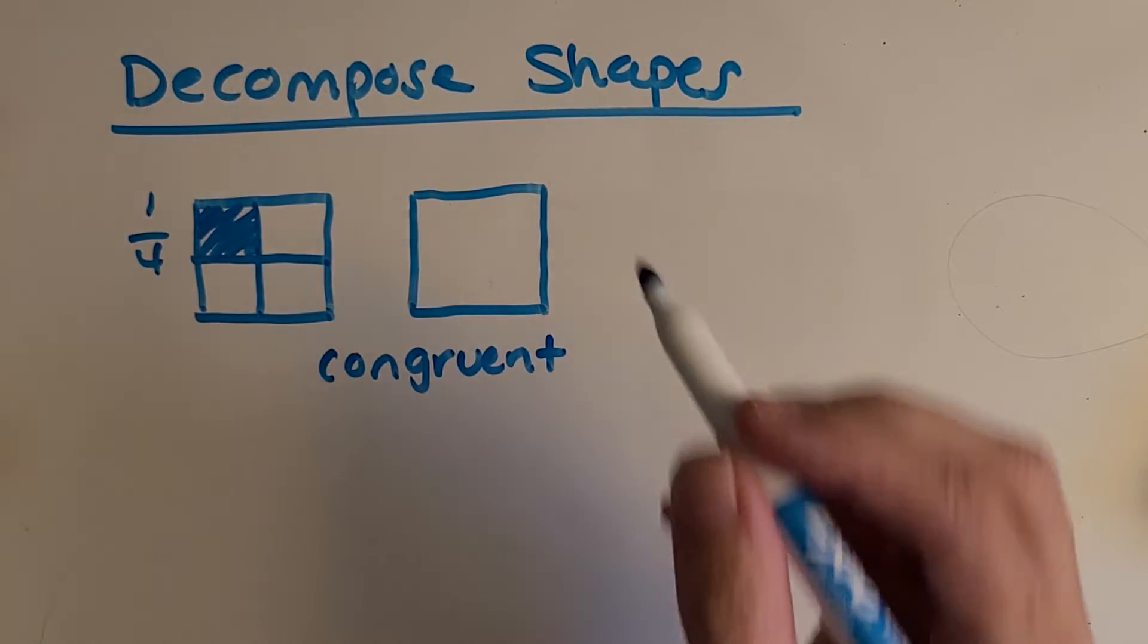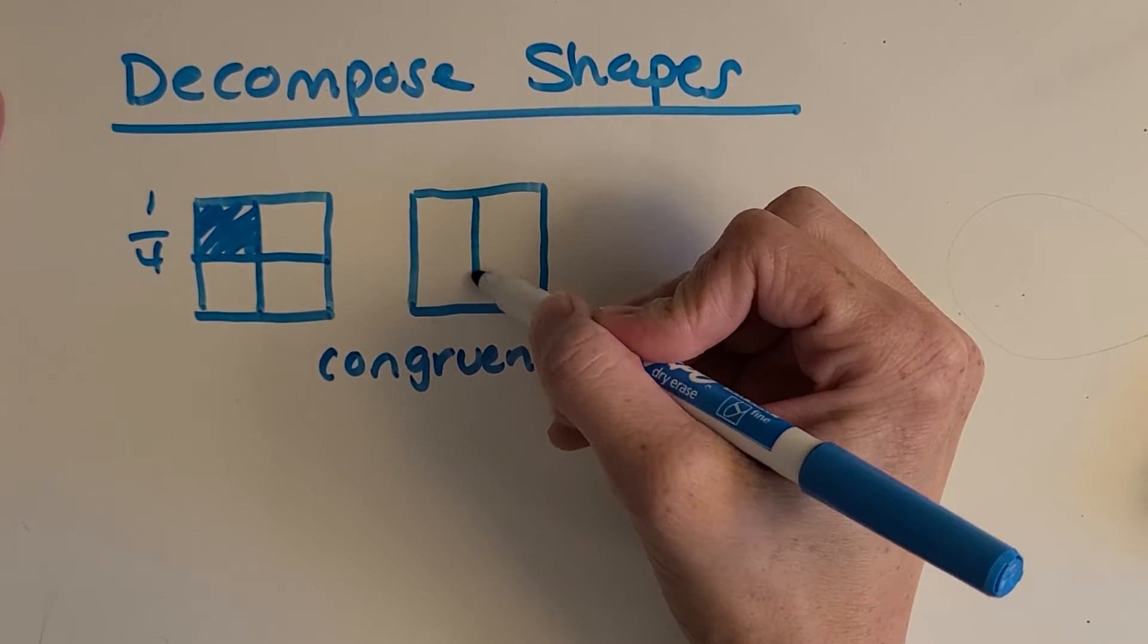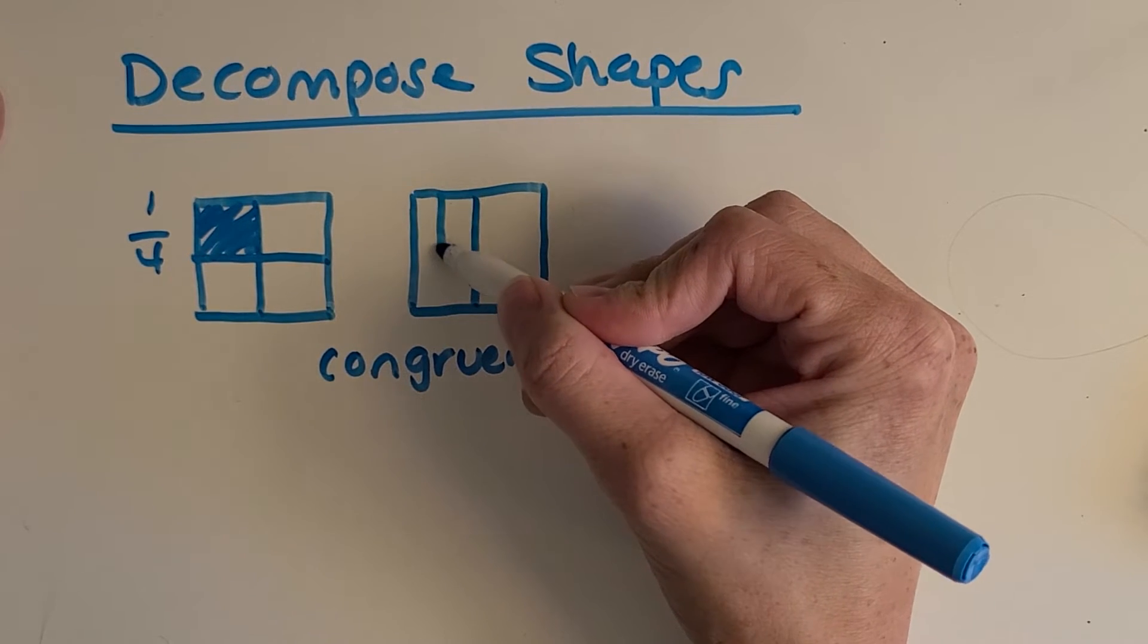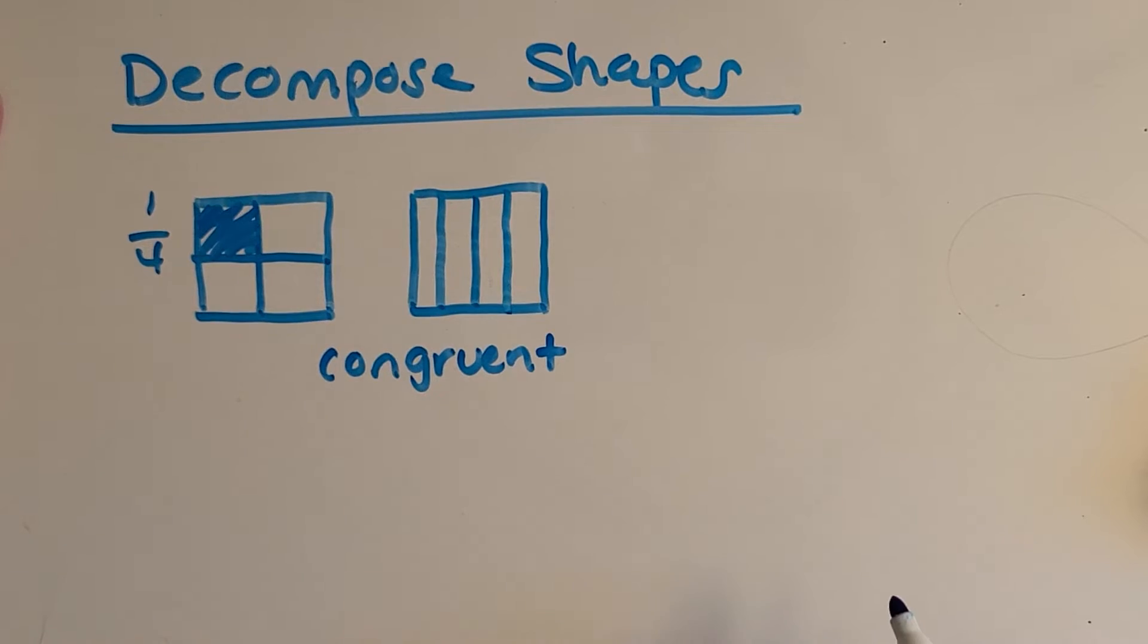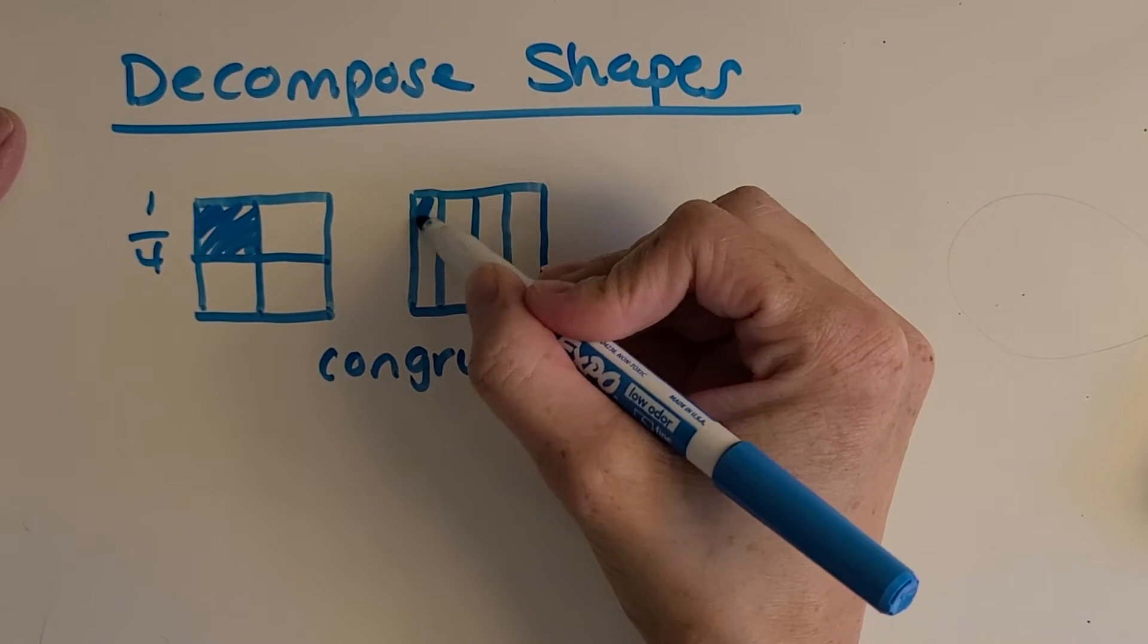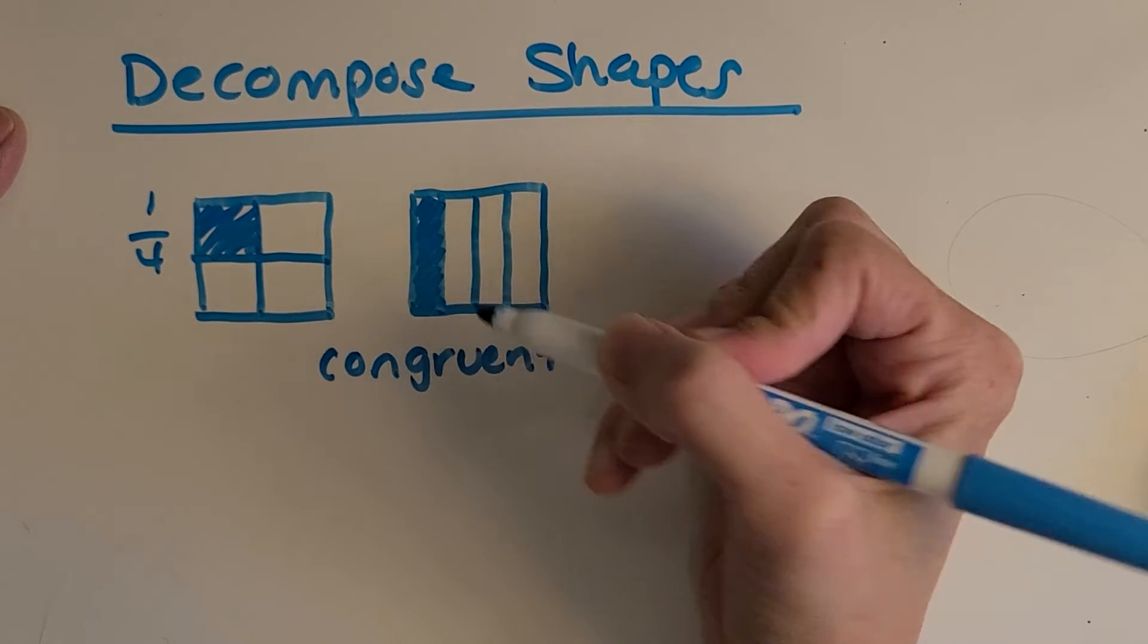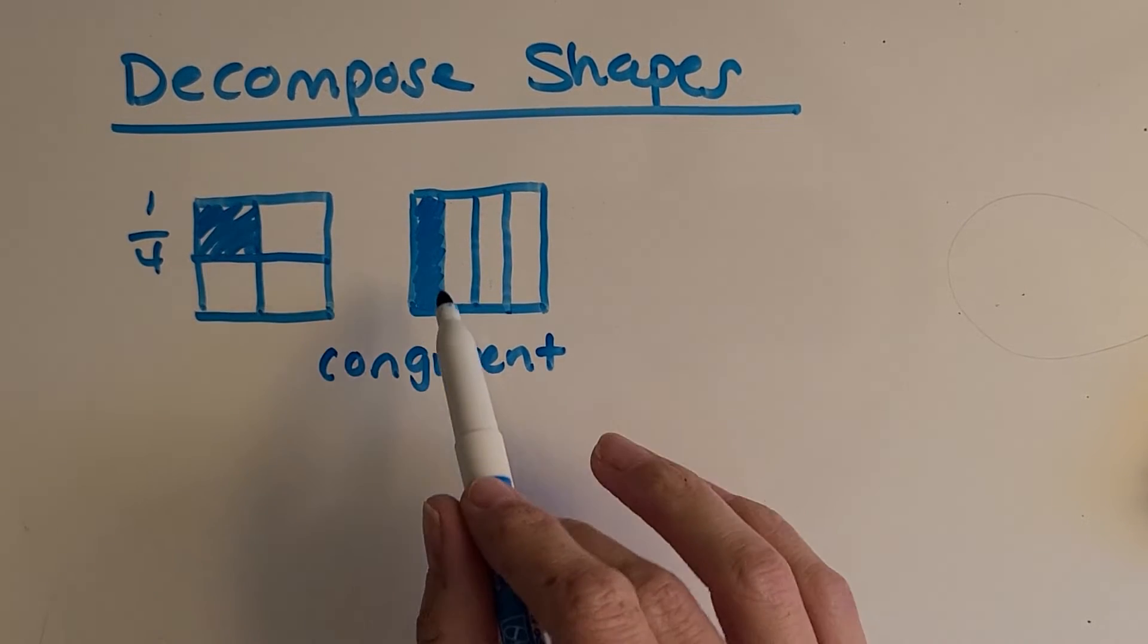You might have thought of several different ways, which is awesome. So you might have thought of, well we can have strips like this. Not my most perfect drawing ever, but if I shaded in this, it represents one fourth and they're equal parts.